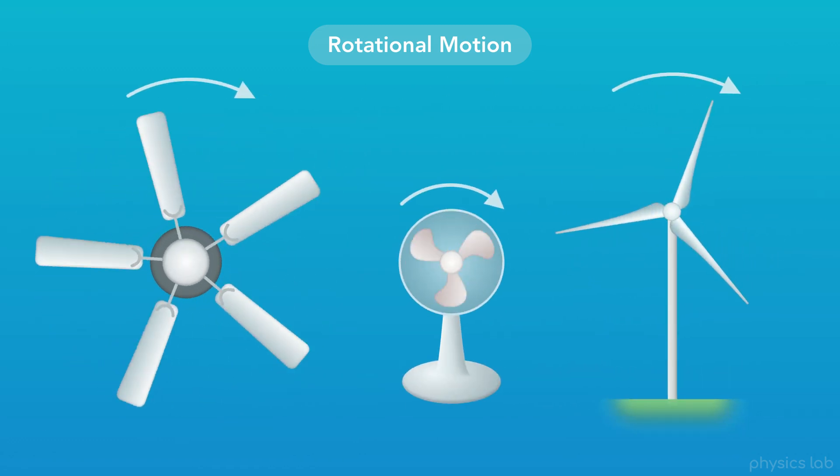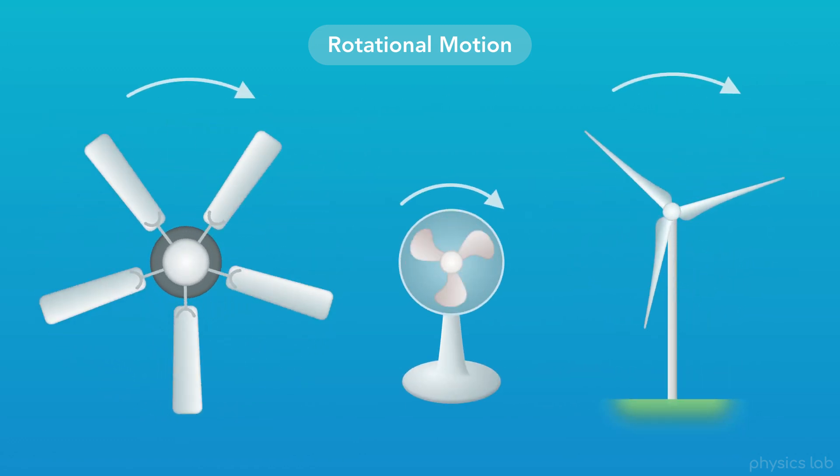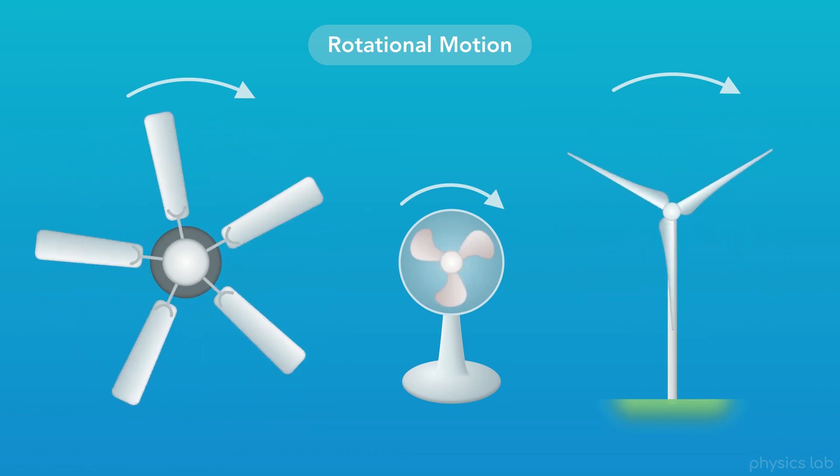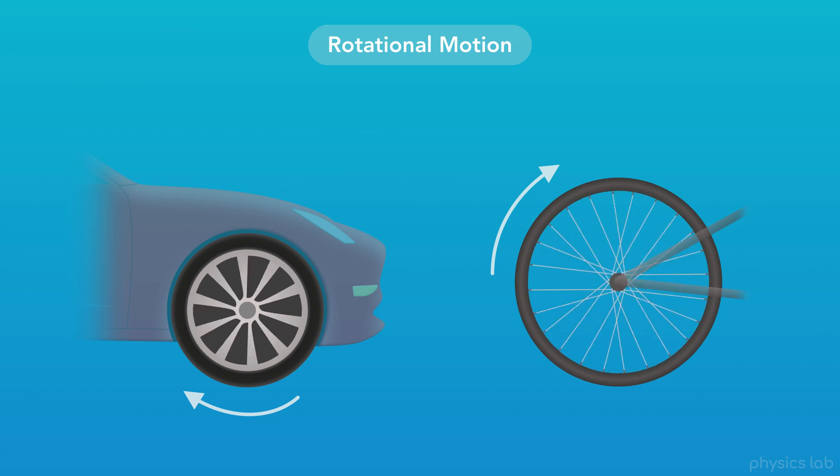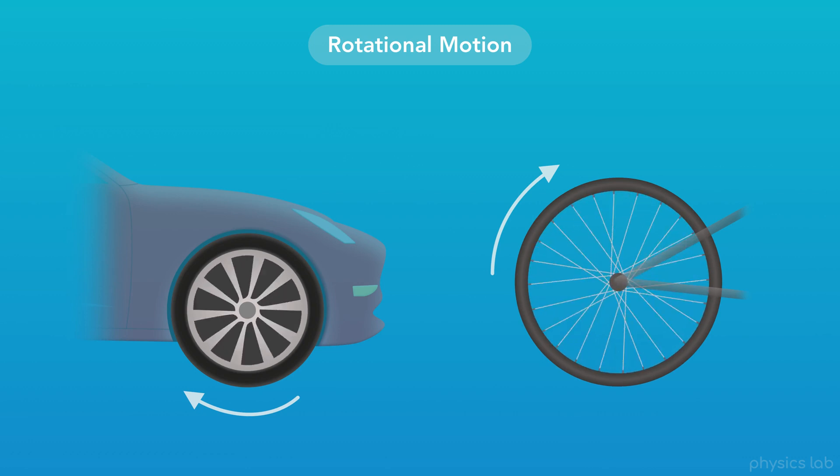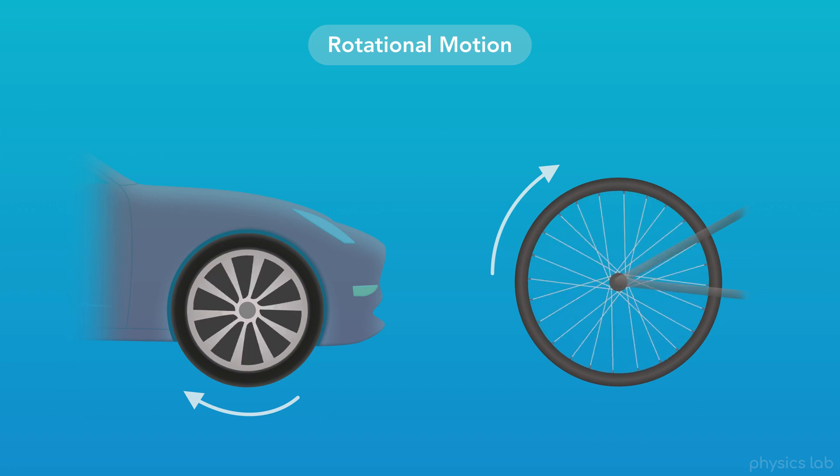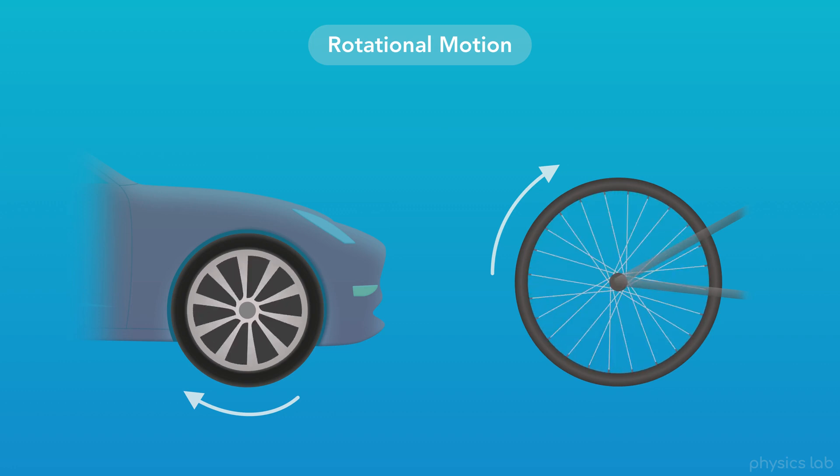Other examples include fans and wind turbines that have blades which all rotate together. We also see rotational motion with wheels. Even though the car or bike might be moving sideways, if we just look at the wheel by itself, then we can focus on its rotational motion.